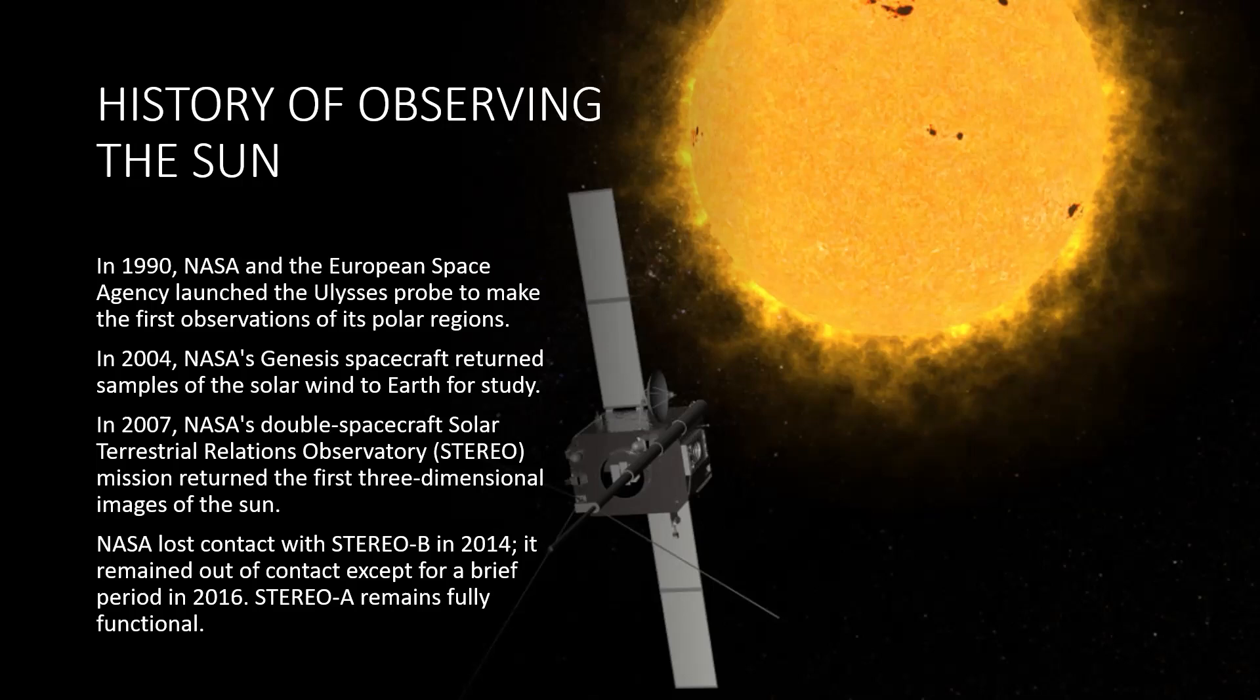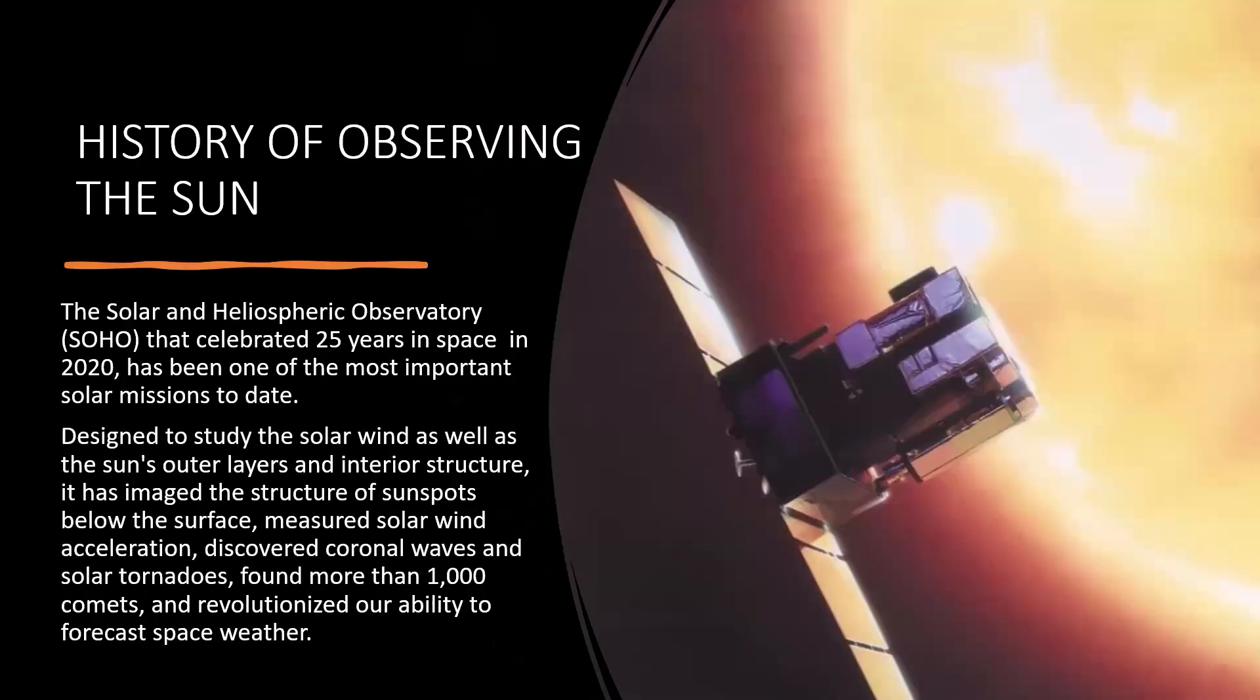In 2007, NASA's Double Spacecraft Solar-Terrestrial Relations Observatory, or STEREO, mission returned the first three-dimensional images of the sun. If you take a picture, it'll be 2D. It doesn't know what really is going on or what the actual shape is. But this equipment, this STEREO is able to do a 3D image of the sun. NASA lost contact with STEREO-B in 2014. It remained out of control except for a brief period in 2016. STEREO remains fully functional. So there was a small glitch, however, it's still working and still sending information back.